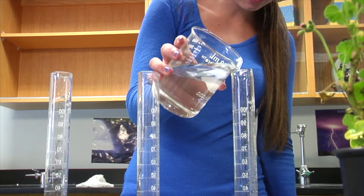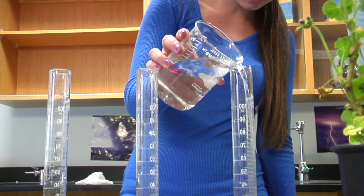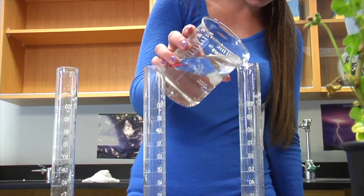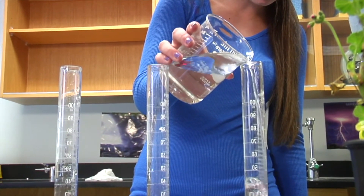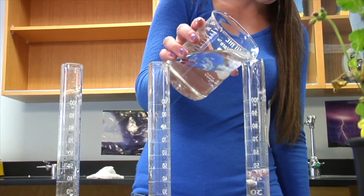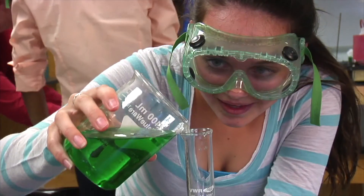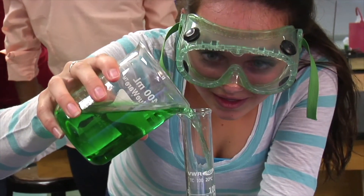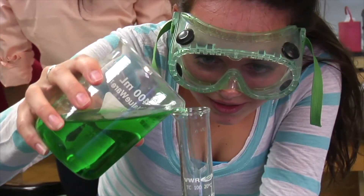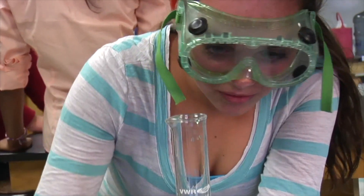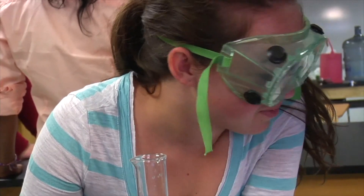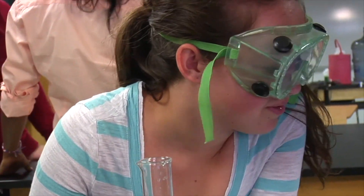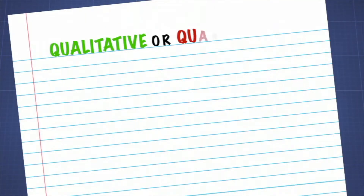These tools are used to obtain numerical data by making accurate and precise measurements during an experiment. Any device that is used to make a measurement during an experiment is generating a quantitative observation. Consider each of the following observations — are they qualitative or quantitative?